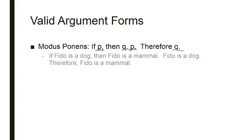For example, another example: if Fido is a dog, then Fido is a mammal. Fido is a dog, therefore Fido is a mammal.